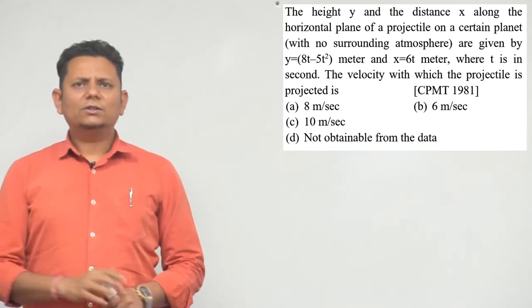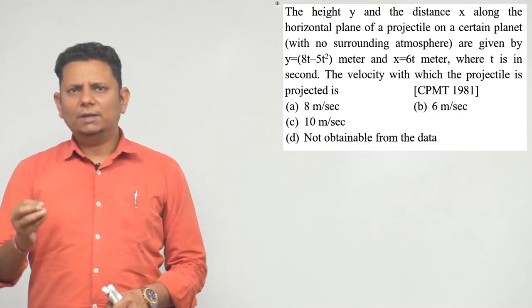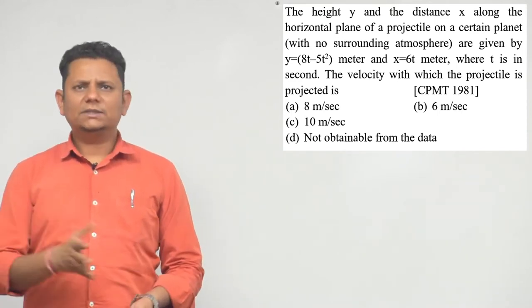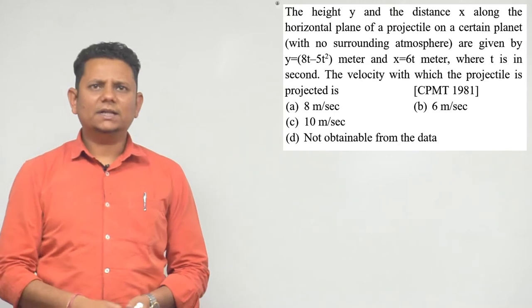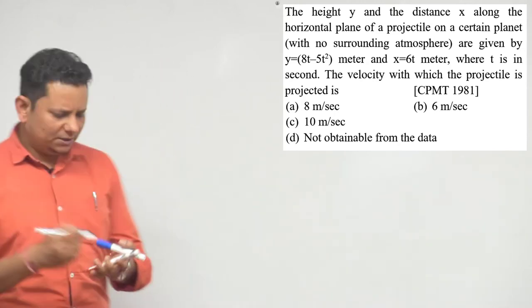The velocity with which the projectile is projected has to be found. Options are 6 meter per second, 8 meter per second, 10 meter per second, or not obtainable from the data.